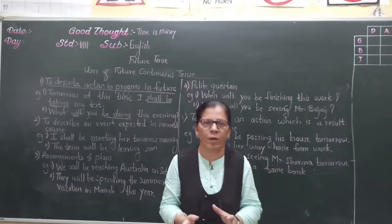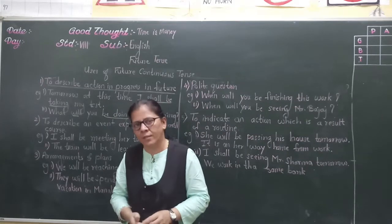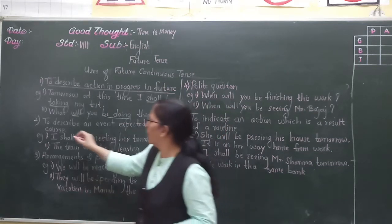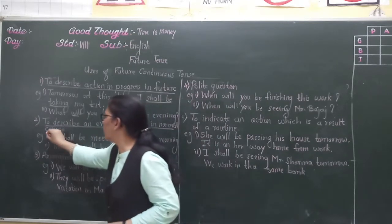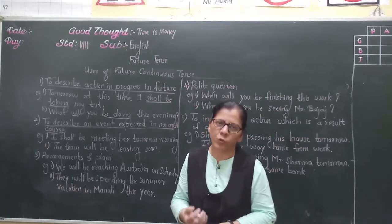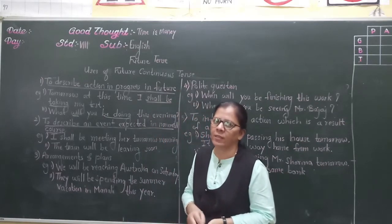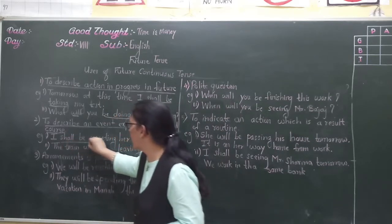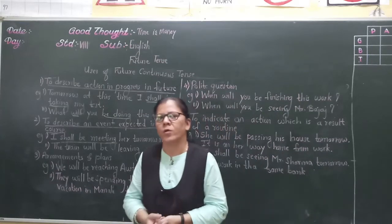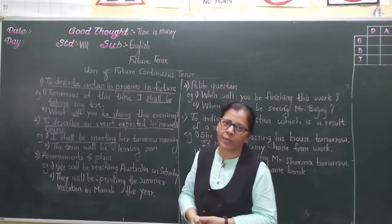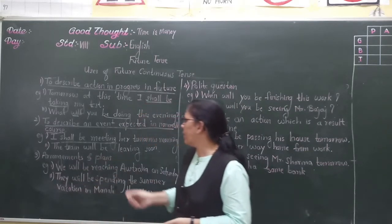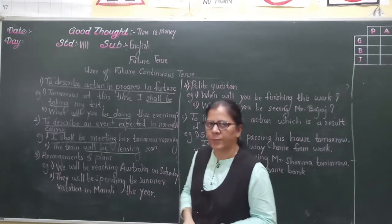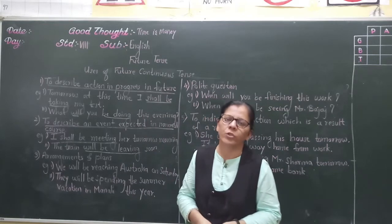The second use is to describe an event expected in the normal course. An event which is expected normally — to describe that event we use future continuous tense. For example: 'I shall be meeting her tomorrow morning.' This is an action going to happen in a normal course. Second example: 'The train will be leaving soon.' So to describe an event expected in normal course we use future continuous tense.